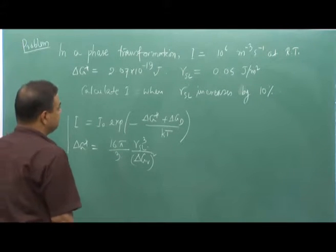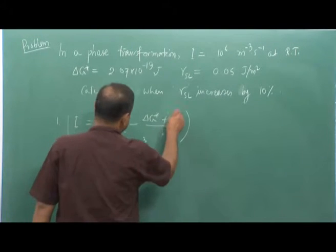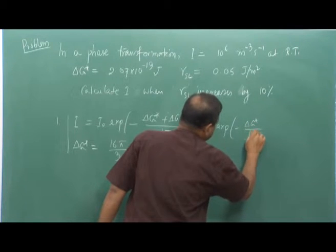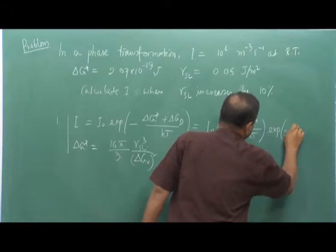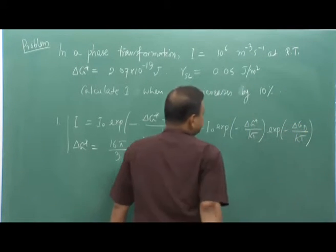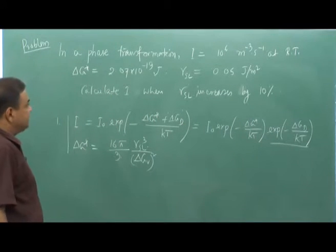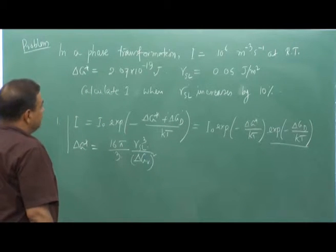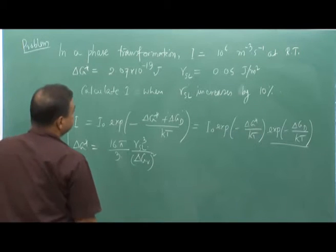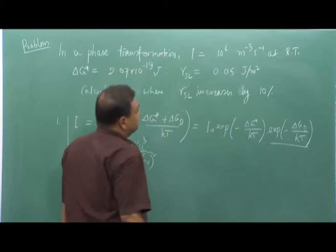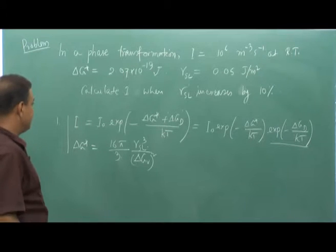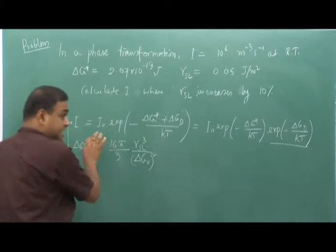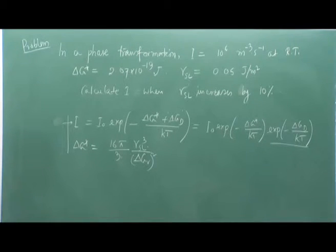Since the temperature is the same, we can break the first equation into two parts: I₀ · exp(−ΔG*/kT) · exp(−ΔGD/kT). The term exp(−ΔGD/kT) remains the same whether γSL is 0.05 J/m² or when γSL increases by 10%. We know I = 10⁶ m⁻³s⁻¹. We are just giving a hint — you have to do this exercise yourself.